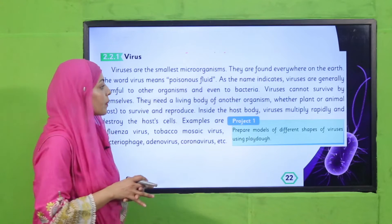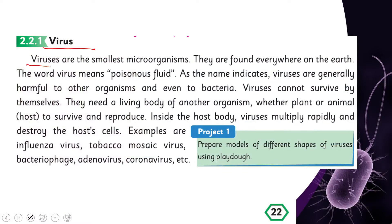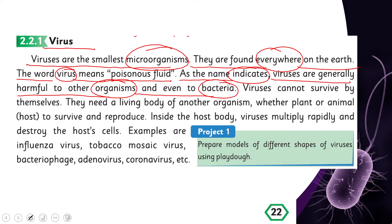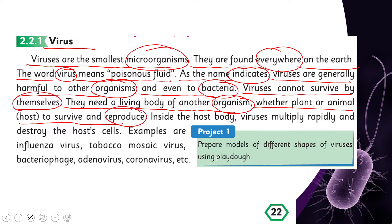Viruses are the smallest microorganisms. They are found everywhere on Earth. The word 'virus' means poisonous fluid. As the name indicates, viruses are generally harmful to other organisms and even to bacteria. Viruses cannot survive by themselves — they need a living body of another organism, whether plant or animal, to survive and reproduce. Inside the host body, viruses multiply rapidly and destroy the host's cells.